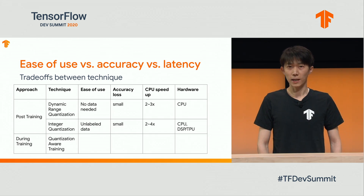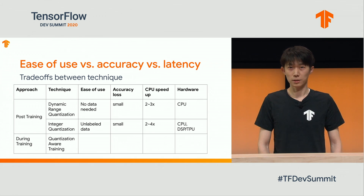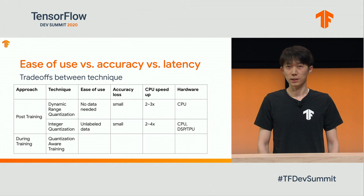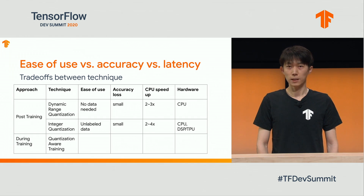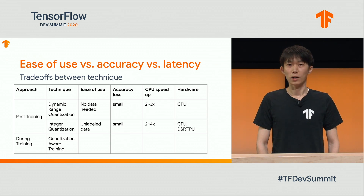If we want extra speedup on CPU or want to run the model on hardware accelerators, we can use integer quantization. It runs a small set of unlabeled calibration data to collect the min-max range on activation. This removes floating-point calculation from the compute graph, so there is a speedup on CPU. More importantly, it allows the model to run on hardware accelerators such as DSP and TPU, which are faster and more energy-efficient than CPU.